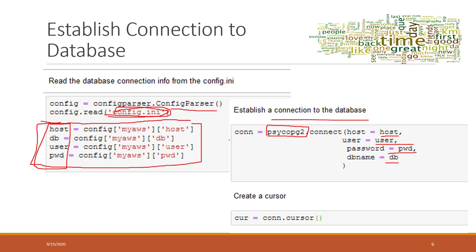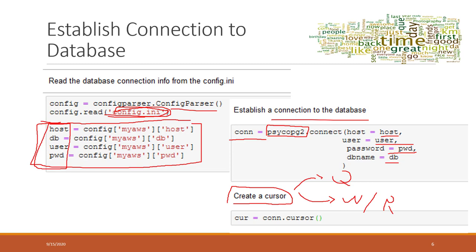Once we have that connection established, we are going to create a cursor. The cursor is very, very powerful. The cursor can make queries, and also the cursor can read and write data into your database. The cursor can also modify your table, like doing some updates and writing information into your database.